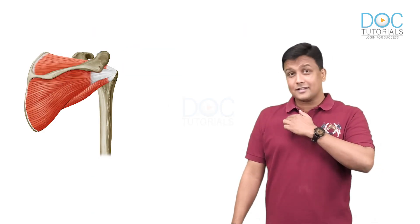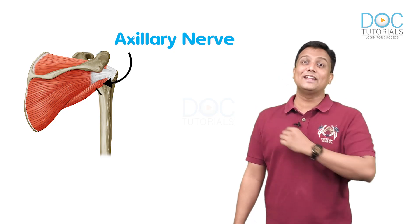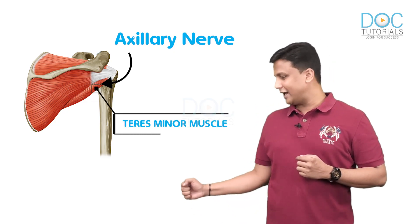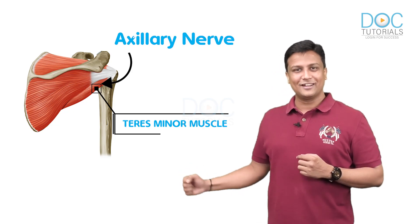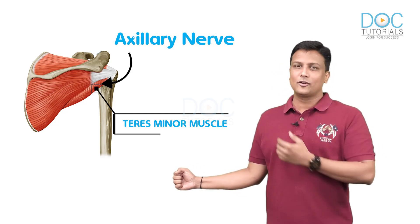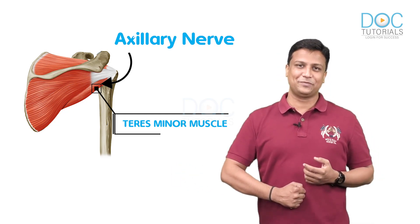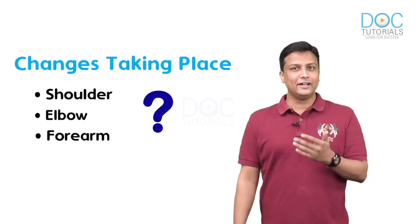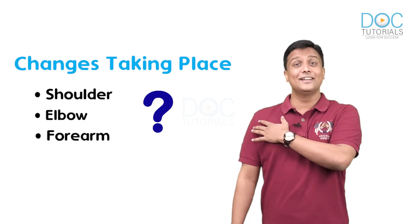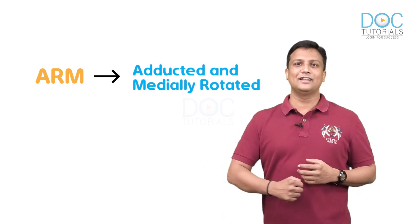The axillary nerve not only supplies the deltoid muscle, it also supplies the teres minor muscle, and the teres minor helps in external rotation. So if the axillary nerve is gone, the arm will be in a medially rotated position. Therefore, in Erb's Paralysis, the arm will be adducted and medially rotated.